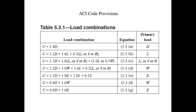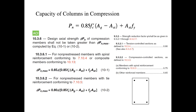ACI code provides a list of different load combinations that should be tested for designing any structural member. For example, one case includes 1.4 times the dead load, meaning structural members should be designed for at least that load. We have to calculate all load combinations and then choose the one that gives the highest load. For the axial capacity of a column, we can calculate using the formula for nominal load carrying capacity: P_N = 0.85 × f'_c × A_concrete + A_steel × f'_y.